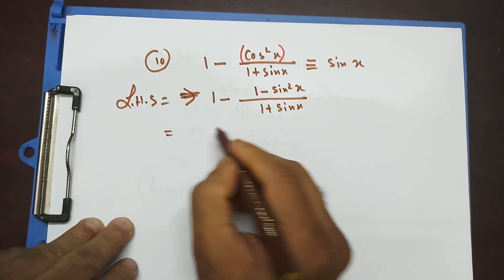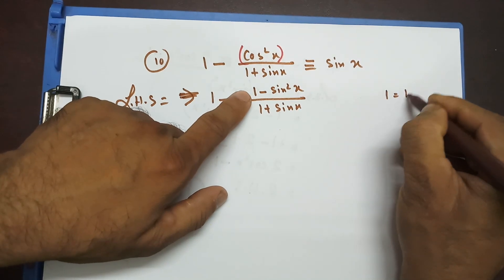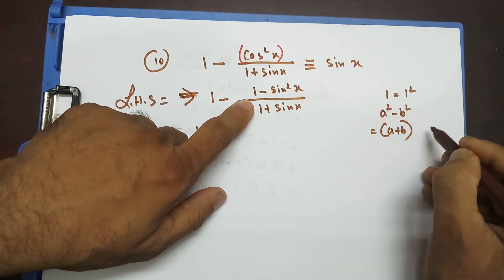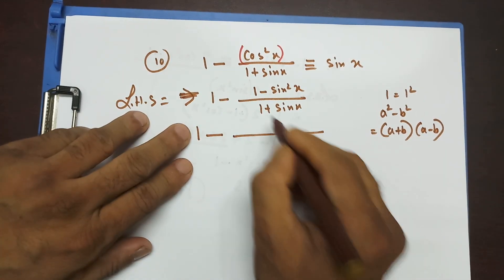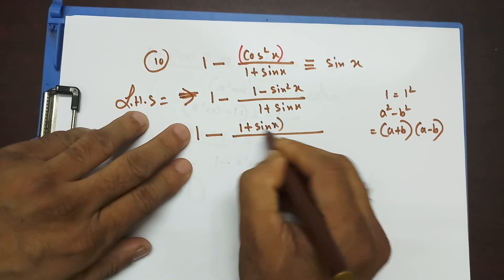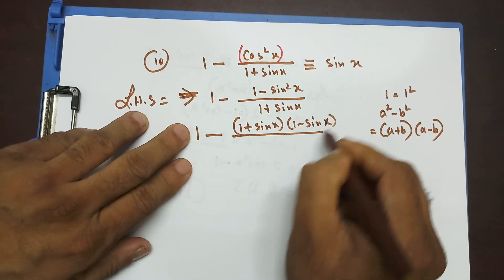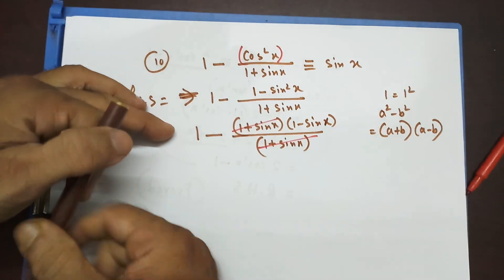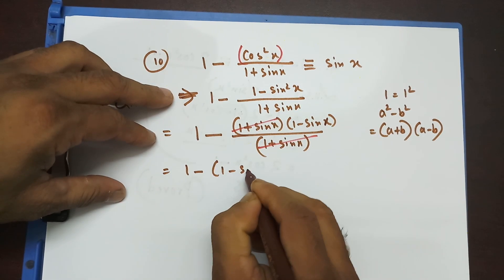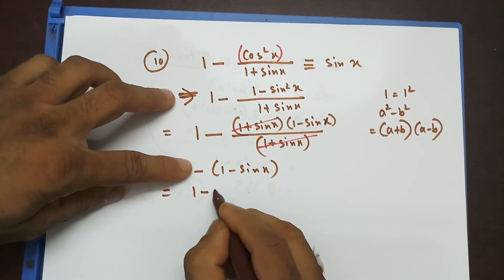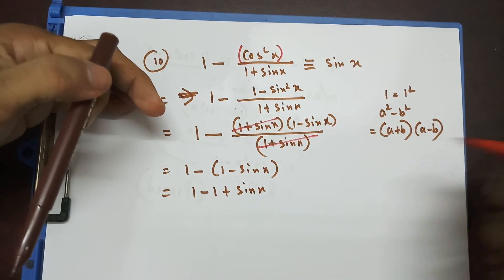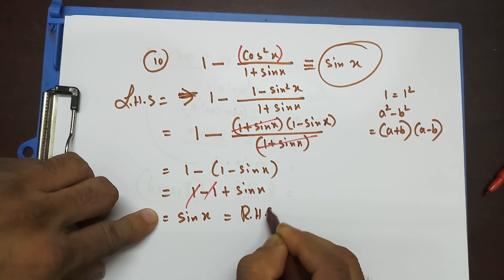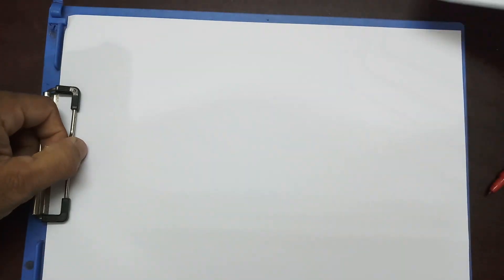Writing 1 as 1 squared, the numerator becomes 1 squared minus sin squared x, which is in the form a squared minus b squared. That factors as (1 plus sin x)(1 minus sin x). The denominator is (1 plus sin x). Cancelling the common factor of 1 plus sin x, I'm left with 1 minus sin x. Expanding: 1 minus 1 minus sin x gives just sin x, which is the right-hand side — proved.